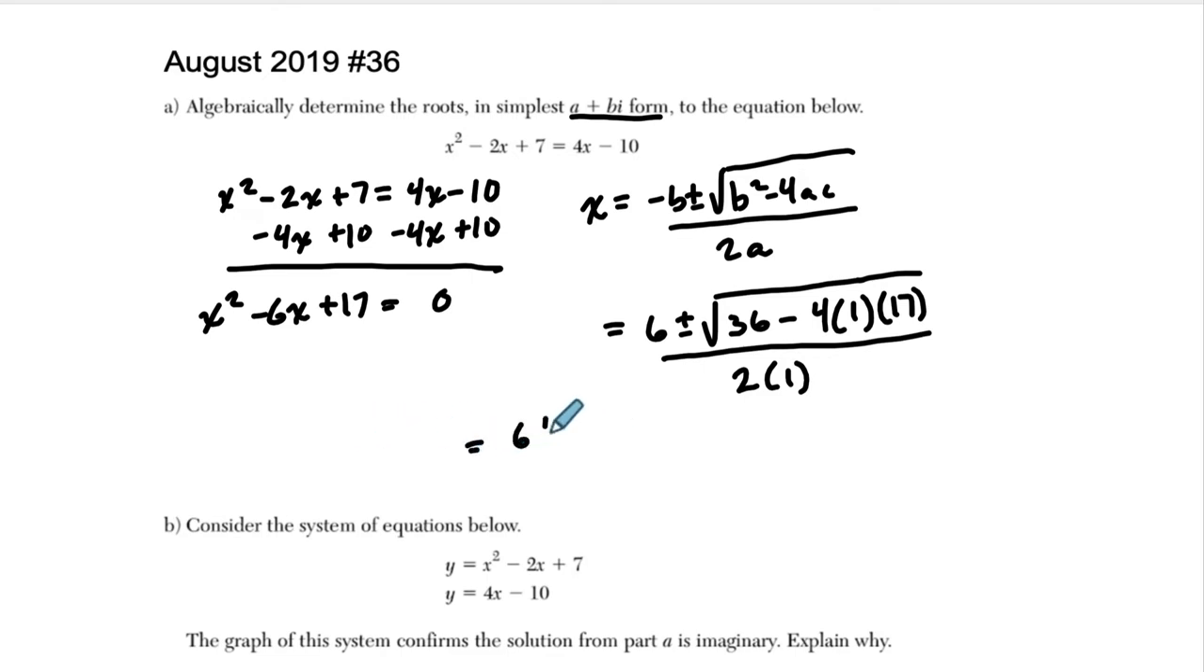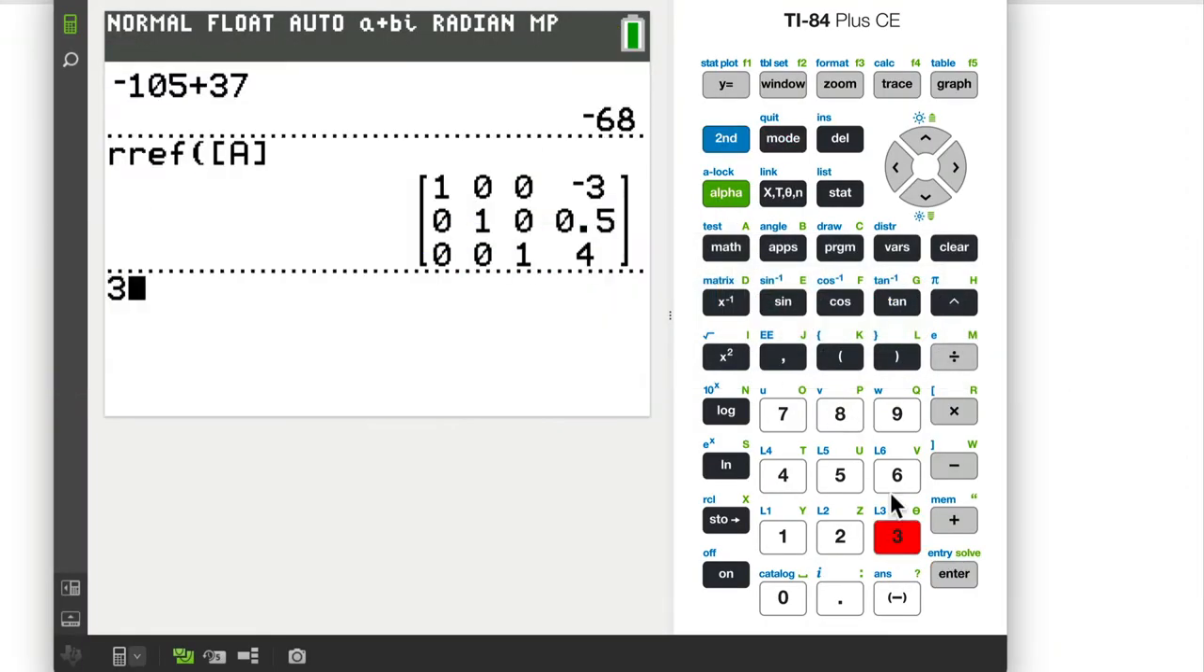So it's going to get us 6 plus or minus this mess in here. So 36 minus 68. Am I doing that right? Quit out of here. Long day. Let's just do it on the calculator.